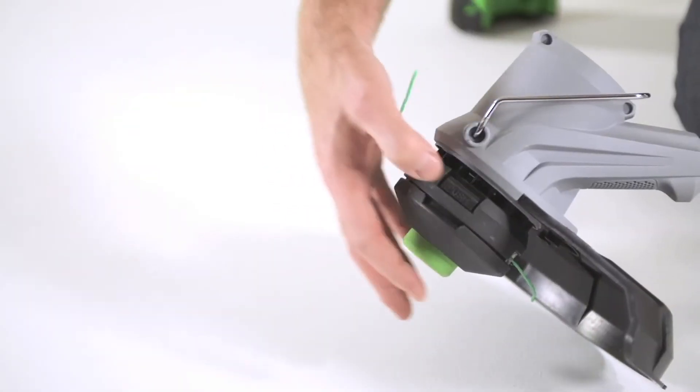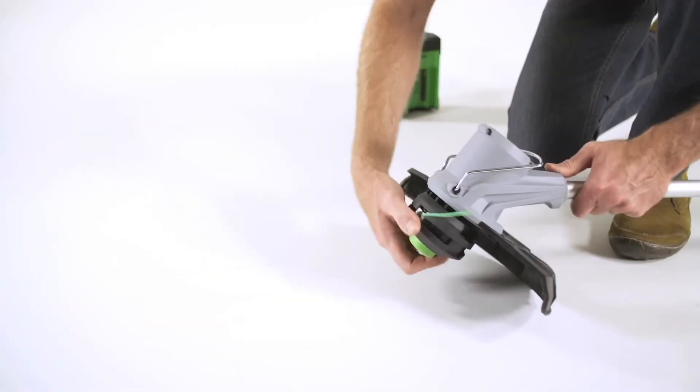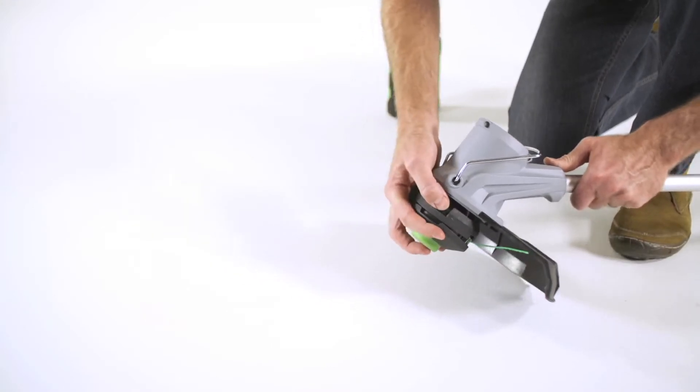When the battery is out, press the release tabs on the spool retainer and remove the spool retainer by pulling it straight out.